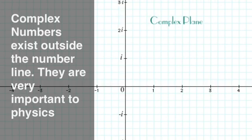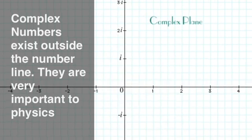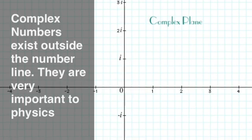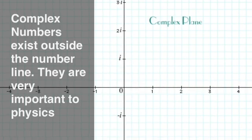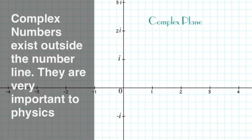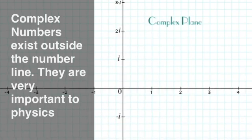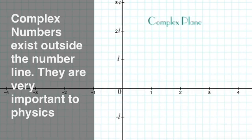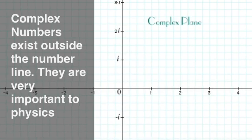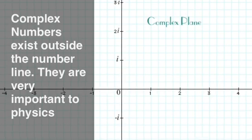When we think of numbers, we usually picture a number line with a zero in the center, the negative numbers all to the left, and the positive numbers all to the right. However, mathematics shows that this picture is probably somewhat inaccurate, in the sense that other numbers outside this number line also play a very important role in physics. These numbers are called complex numbers.